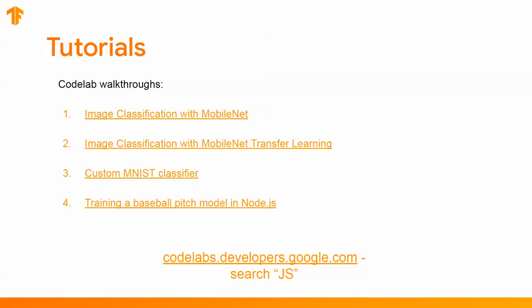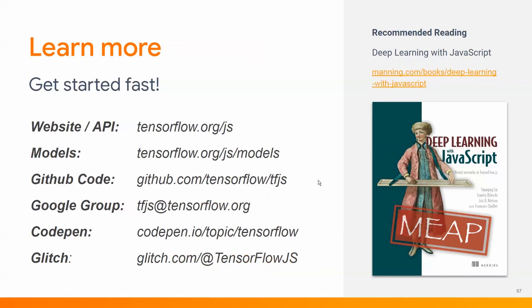I'd like to talk about resources you can use to get started. If there's one slide you want to bookmark, let it be this one. Here are some tutorials — codelabs — you can walk through step by step and learn as you go. These are robust ways to learn TensorFlow.js and machine learning principles in general. Here's our website to get started, the models shown in this demonstration are available on our GitHub, and we have a Google group for technical questions. We also have CodePen and Glitch with boilerplate code. And on the right-hand side is our recommended reading: a great book that covers everything — even if you have no ML background, as long as you know some basic JavaScript.